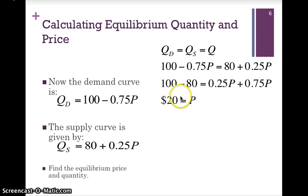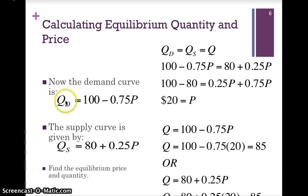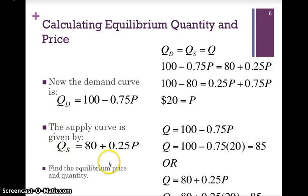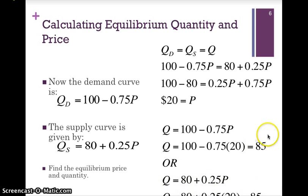Using the price of $20 we can find the equilibrium quantity by substituting into any one of the demand or supply equations, since in equilibrium demand equals supply. Substituting into the demand function 100 minus 0.75P: replacing P with $20 gives a quantity of 85. Checking with the supply function 80 plus 0.25P and substituting $20 gives the same quantity of 85. We have confirmed the equilibrium price of $20 and quantity of 85.